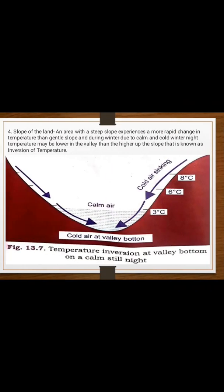Slopes of the Land: An area with a steep slope experiences a more rapid change in temperature than a gentle slope. During winter, due to calm and cold winter nights, temperature may be lower in the valley than higher up the slope — that is known as inversion of temperature. Inversion of temperature means increased temperature with increase in height.